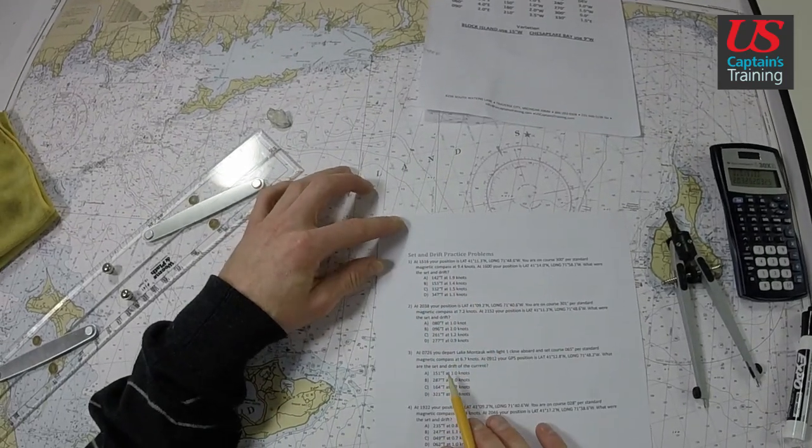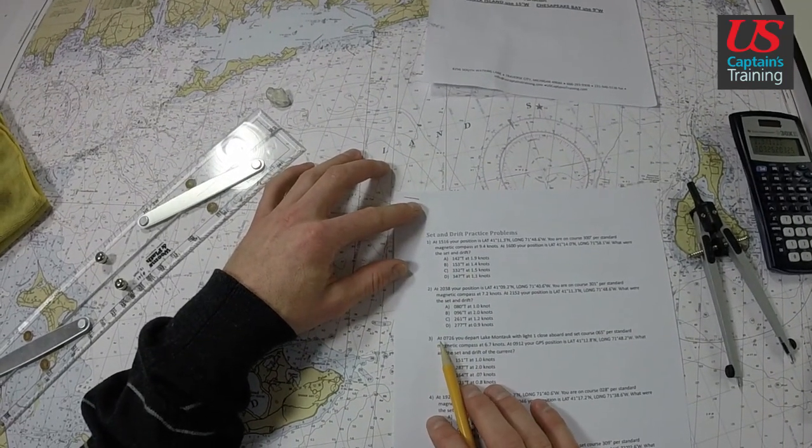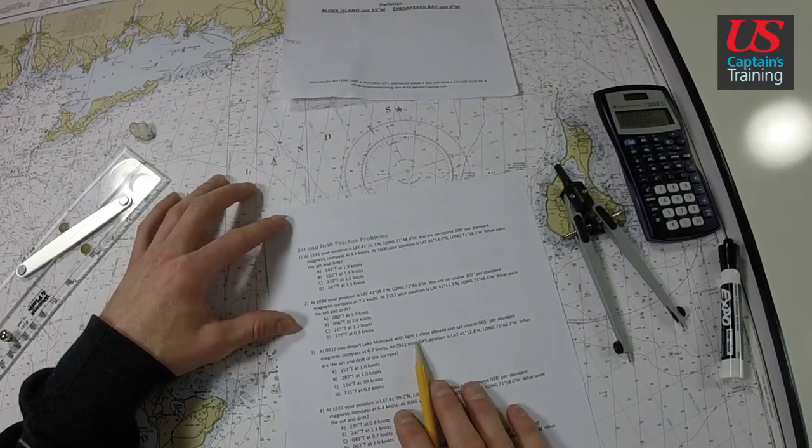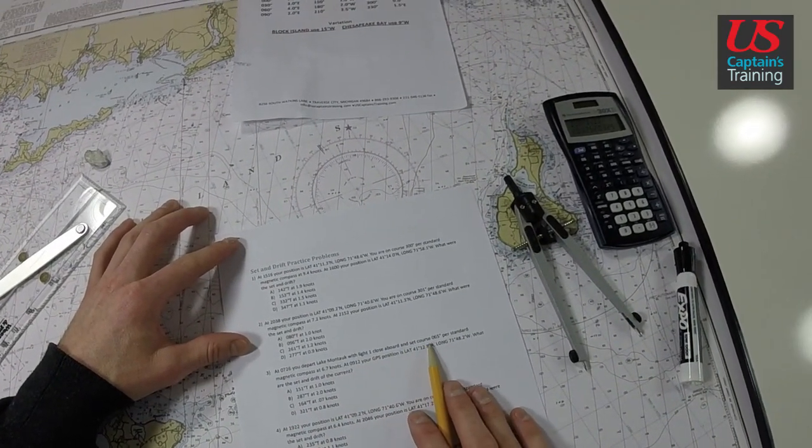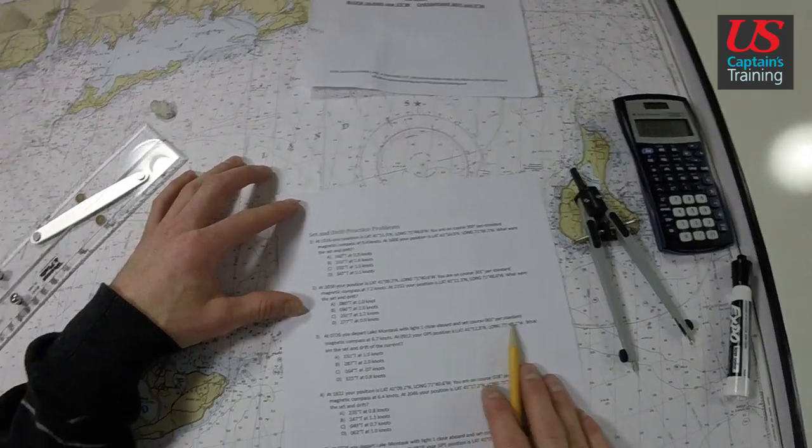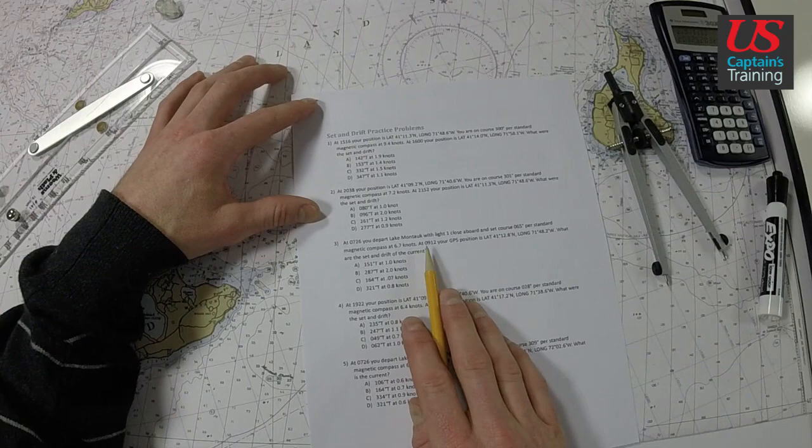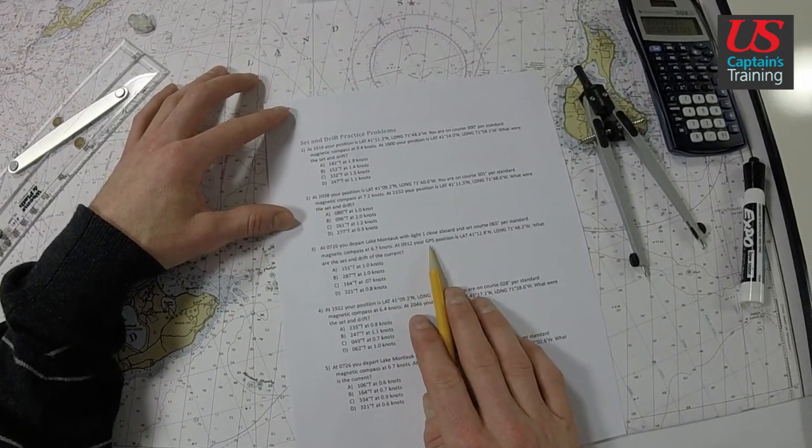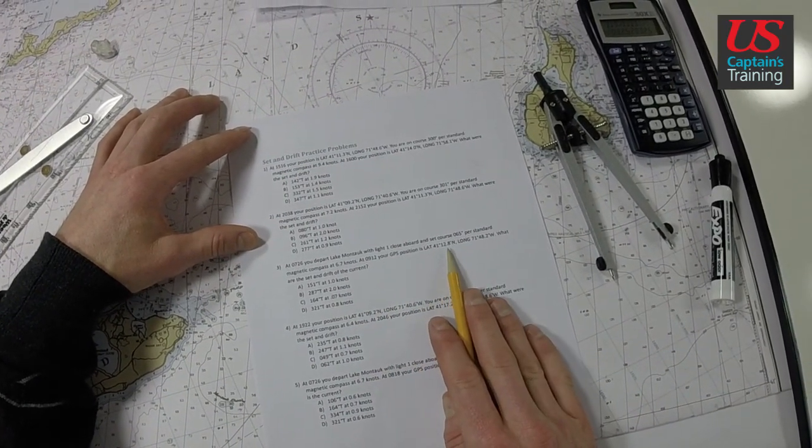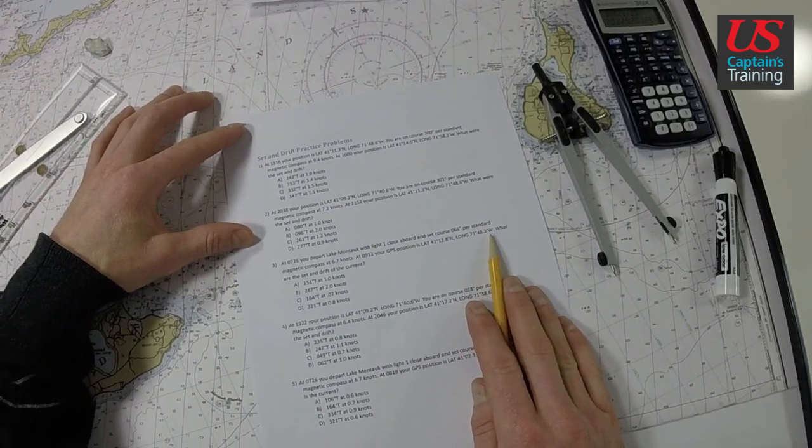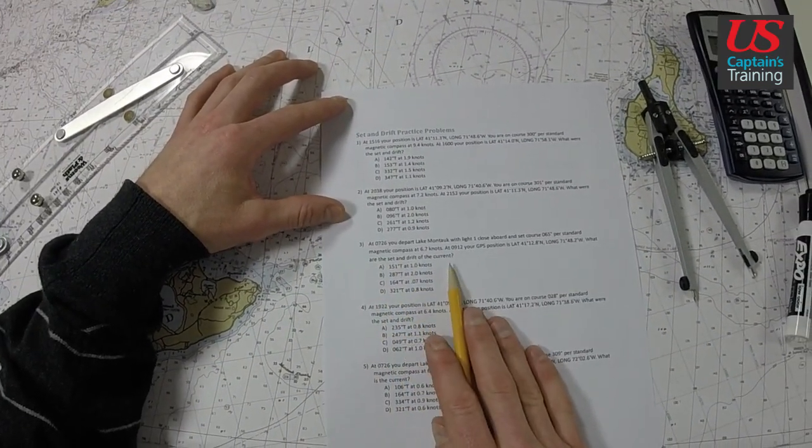Set and Drift Practice Problem 3. At 0726 you depart Lake Montauk with light 1 close aboard and set a course for 65 degrees per standard magnetic compass at 6.7 knots. At 0912 your GPS position is 41°12.8' north, longitude 71°48.2' west. What are the set and drift of the current?